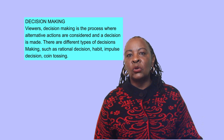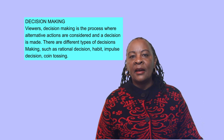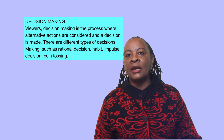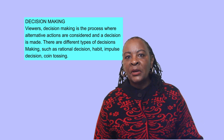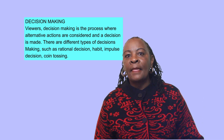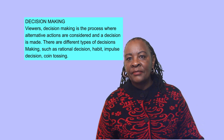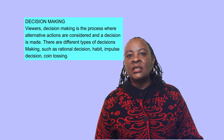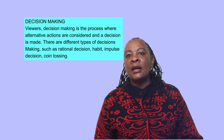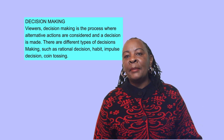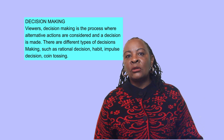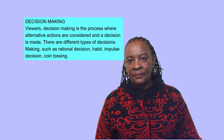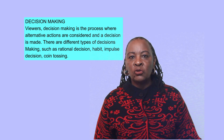There are five steps in the rational decision making process: define the decision, define the goals, define alternative solutions to the problem, choose the best alternative, and evaluate your decision. It is very important to always write them down in order and not mix the steps.